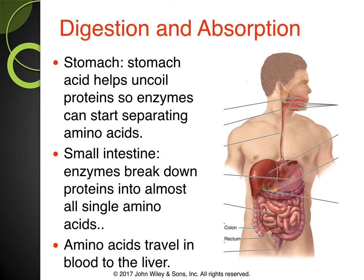We're going to talk about digestion and absorption — breaking proteins down and being able to absorb them. This slide is very important for the test. There's a process called denaturation happening in the stomach. When protein enters the stomach, the stomach acid helps uncoil the proteins, basically breaking them apart so enzymes can start separating the amino acids. Remember: protein digestion occurs in the stomach. The term for uncoiling the protein is denaturation, and denaturation happens in the stomach — remember that for the test.